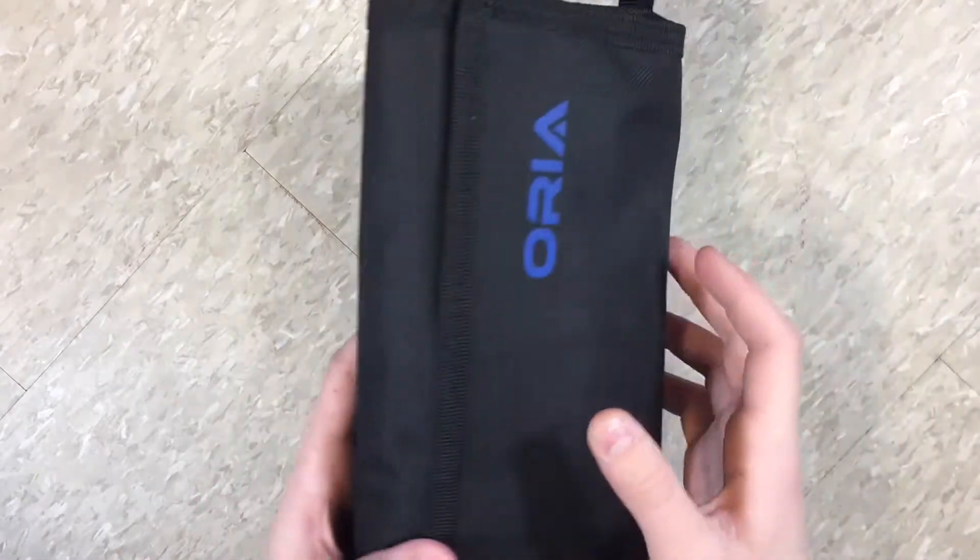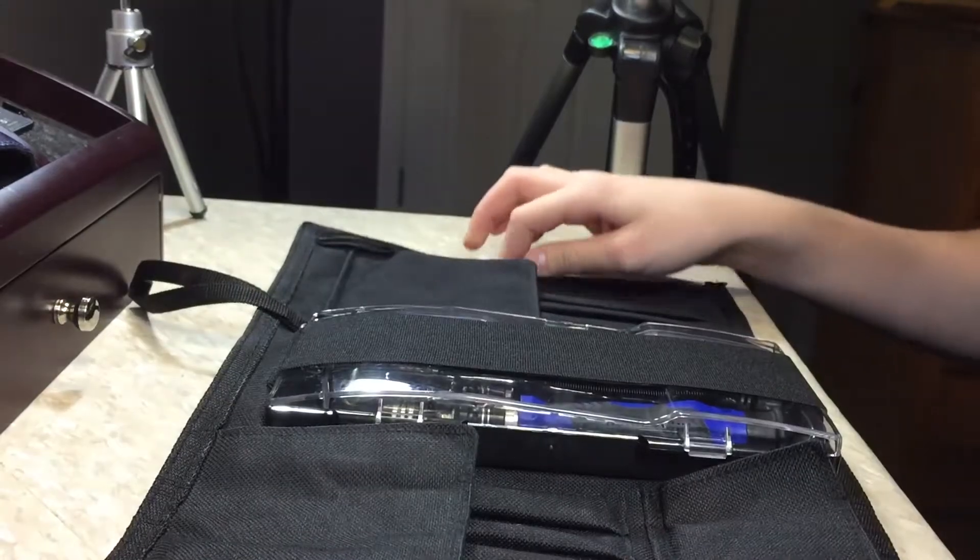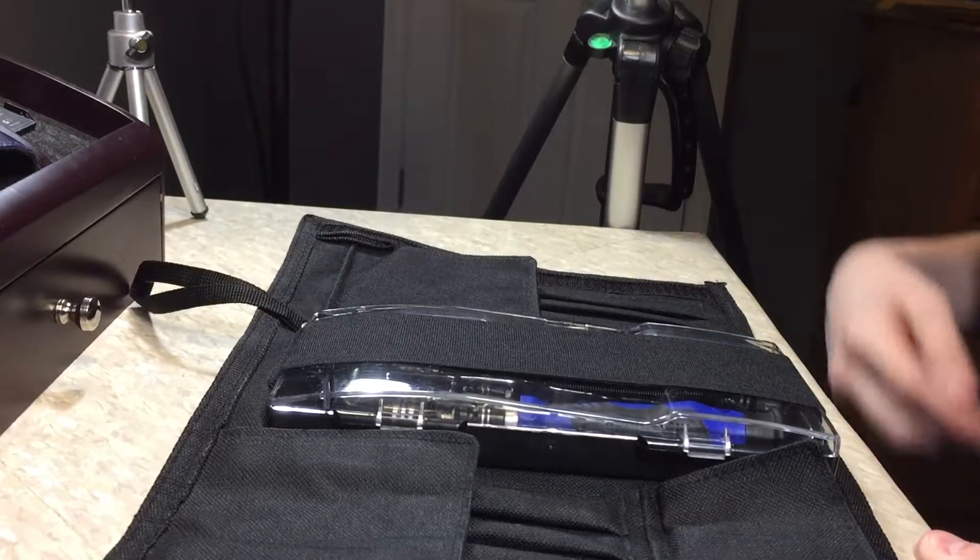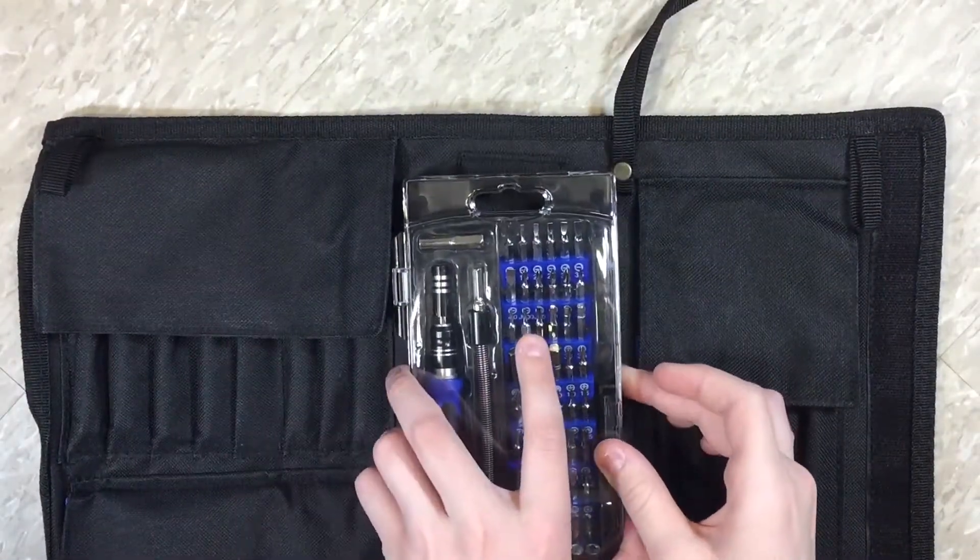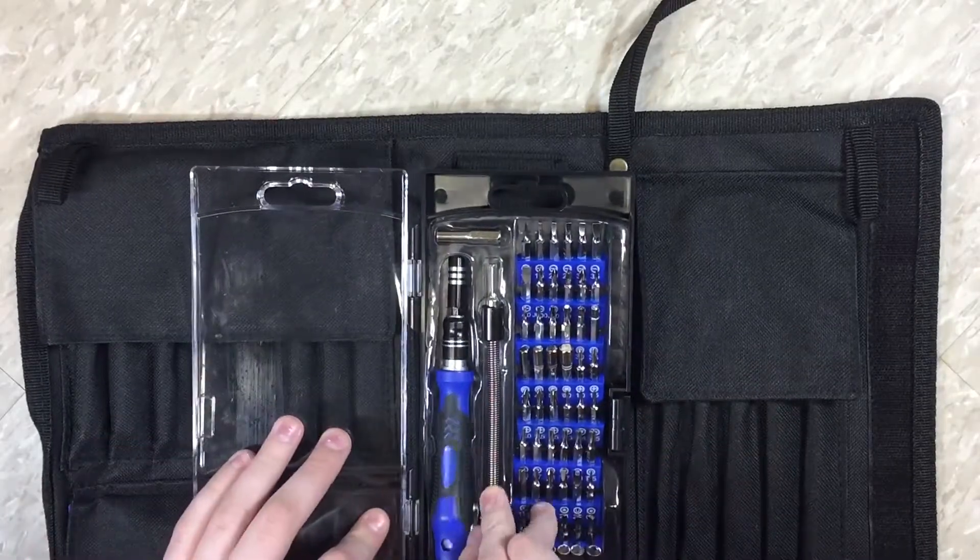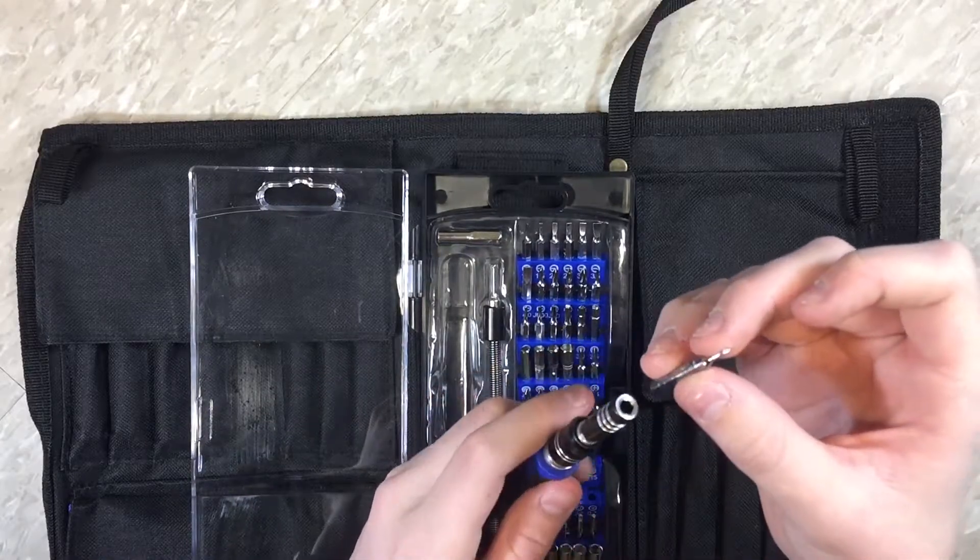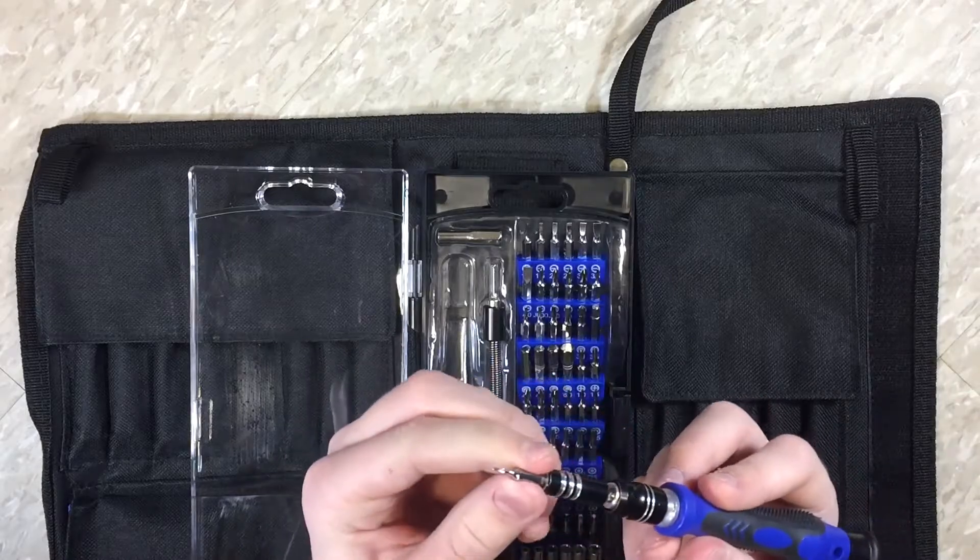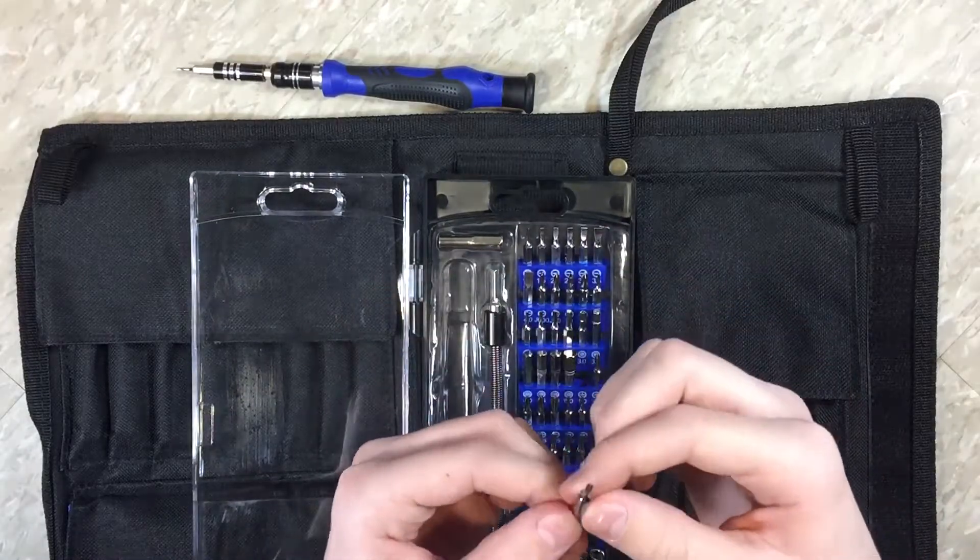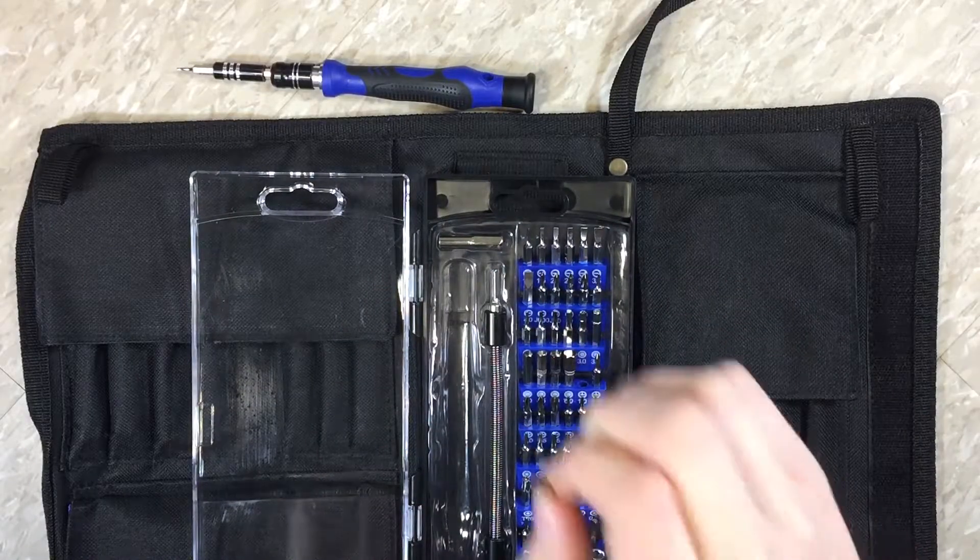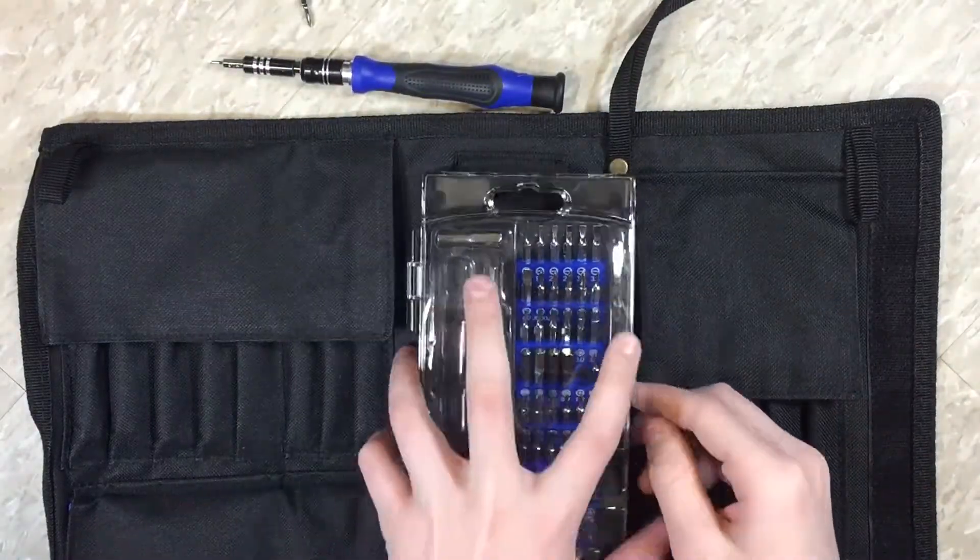The first thing you're going to need is a toolkit. Now I got mine from Oria and I will link this kit down below. Now what you're going to need from this kit is, of course, the screwdriver. You're also going to need a 5.0.8 bit. You can also grab a Phillips 1.0 millimeter bit also and place that by the side. That's all we need from our drill bits.